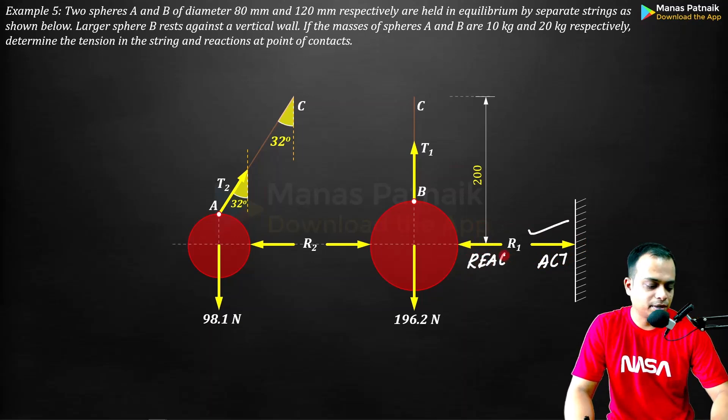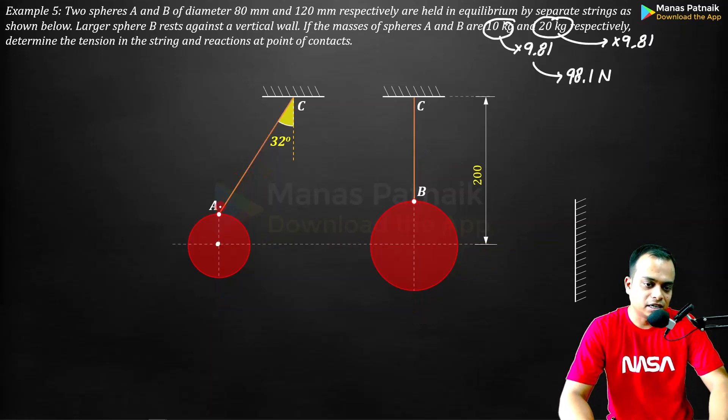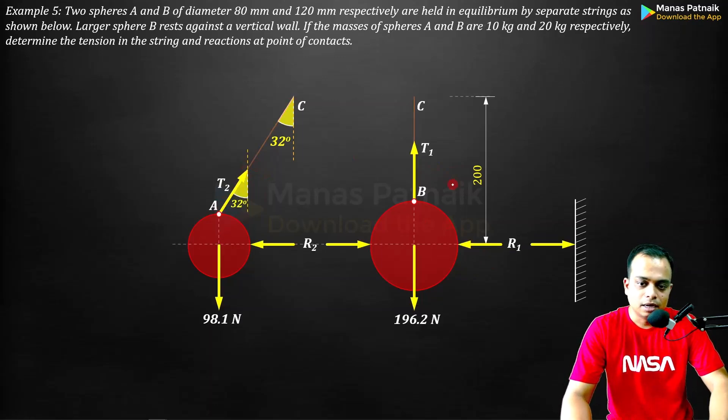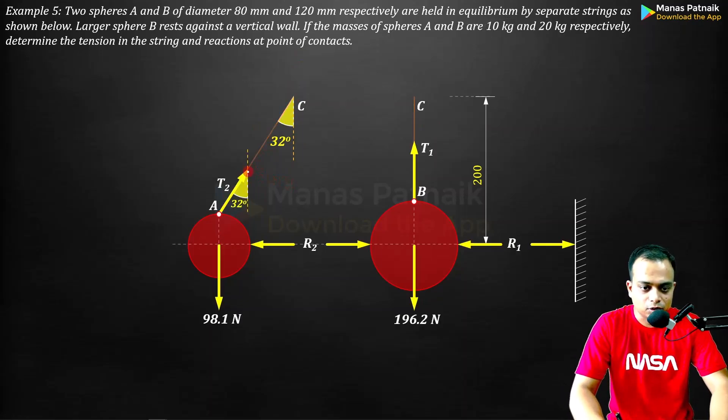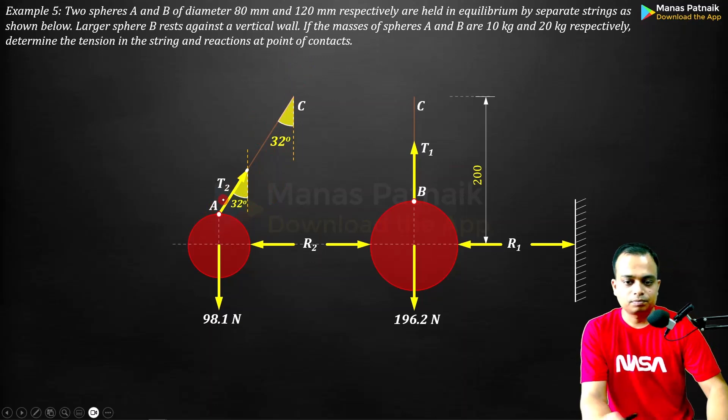Action-reaction pairs are always there - R1, this is tension along AC that's T2, this is tension along BC that's T1. Free body created. This string makes an angle of 32 degrees with the vertical, so here also the angle made with the vertical will be 32 degrees - two parallel lines and a transversal.